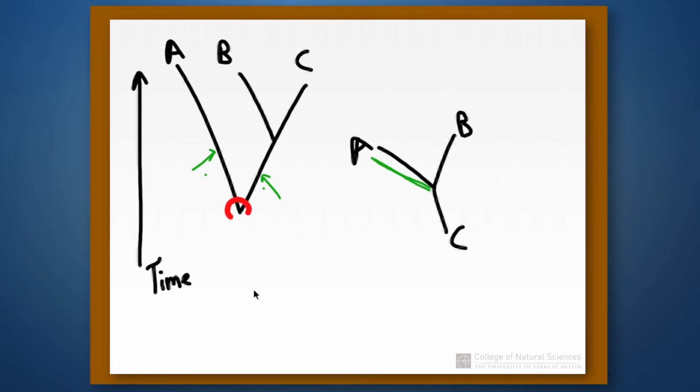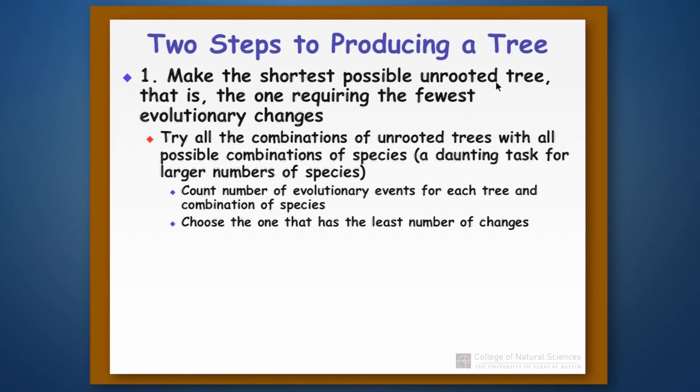So whenever you want to make an unrooted tree simply go straight to the root, straighten out the two branches that come off of the root and you'll have an unrooted tree.